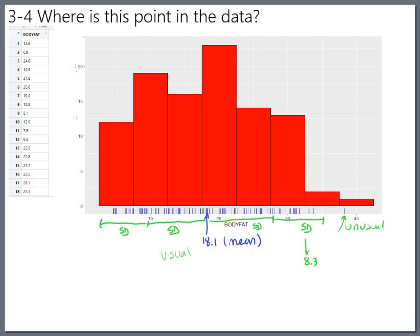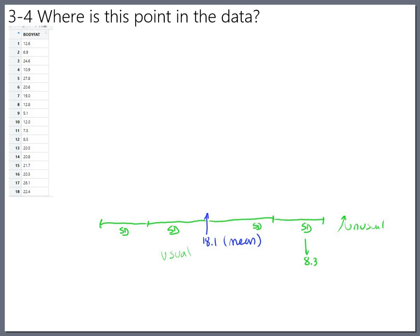So let's go on to talk a little bit about where a particular value is within the data set. So let's get those off of there. And the first method that we want to talk about for measuring where a point is within the data set is something called the z-score.